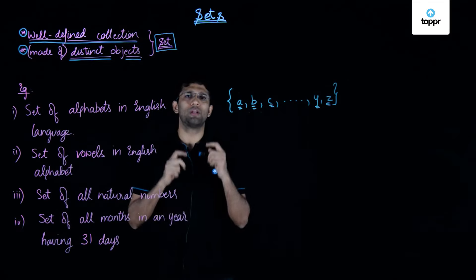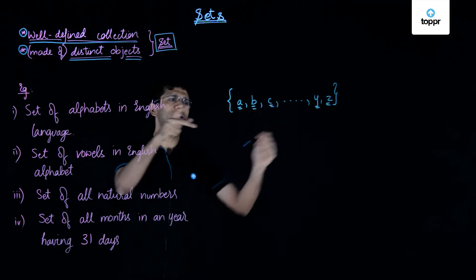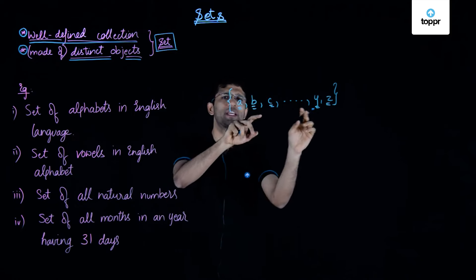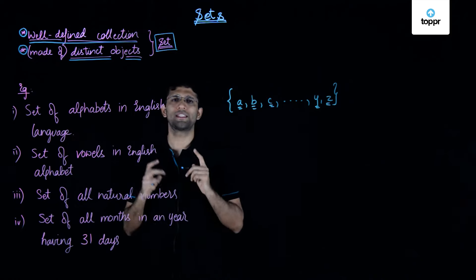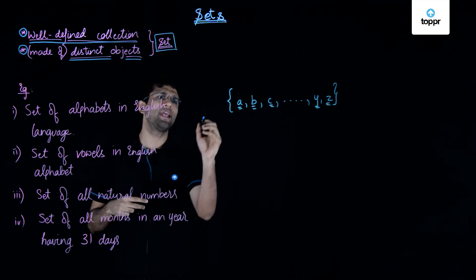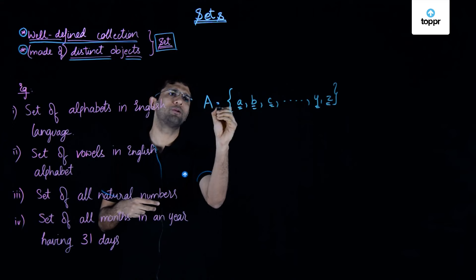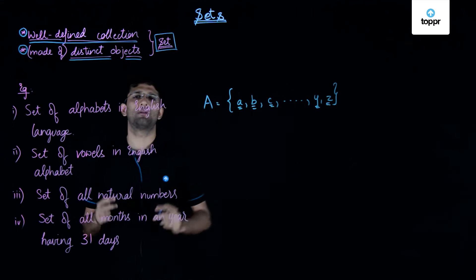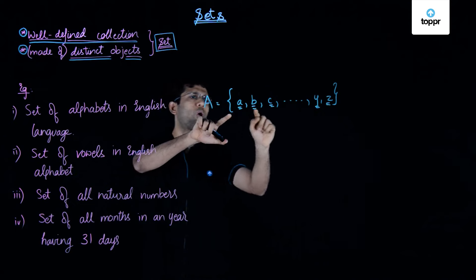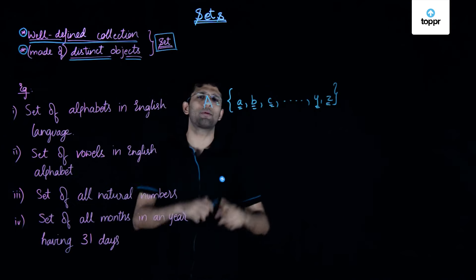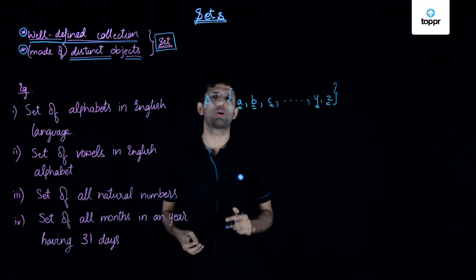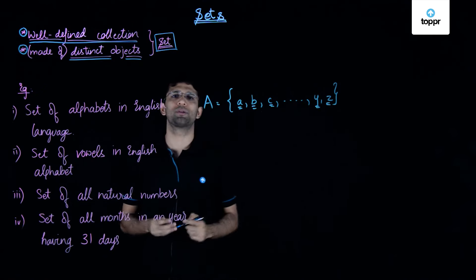Whenever we want to write a set in this form, we write brace brackets around the elements and separate them by commas. Now, a set is represented by capital letters, so if I call this set A, I can write capital A to denote this set. I have now defined this set capital A to consist of all the alphabets in the English language. If you count the number of elements, you will get 26 because there are 26 alphabets in the English language.